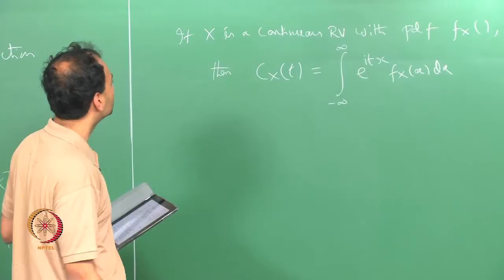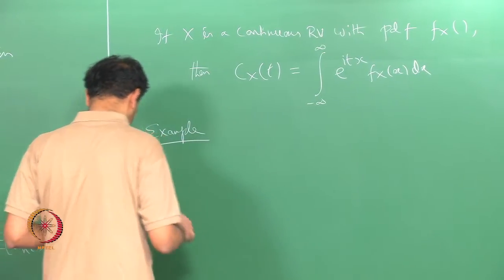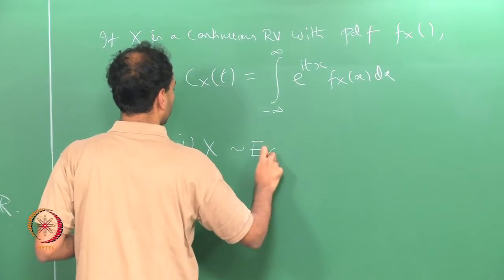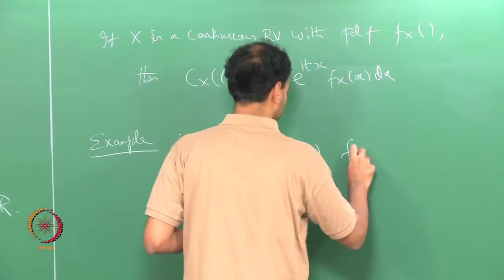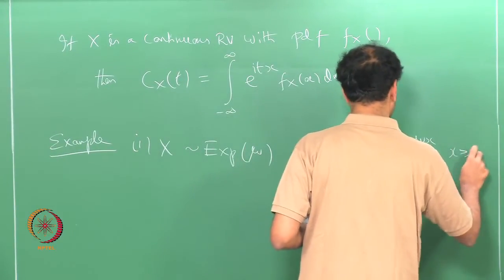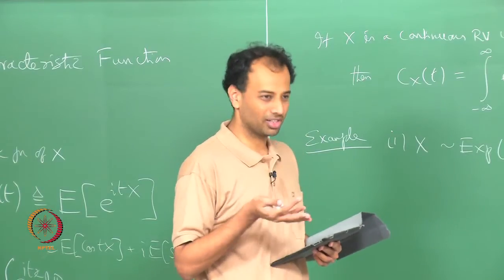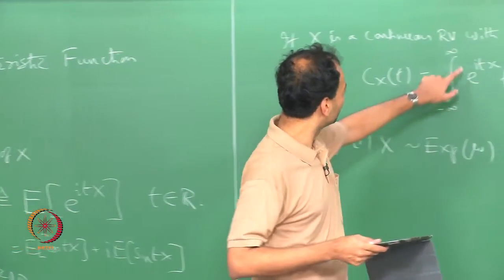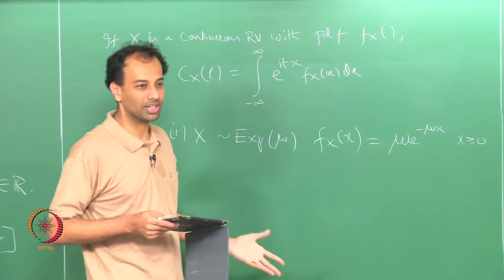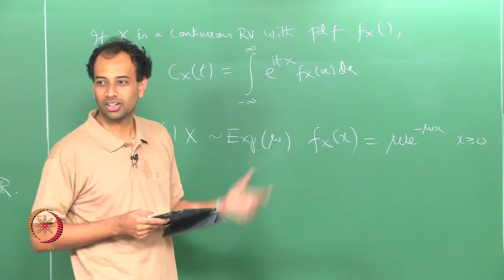Let me give an example. If x is exponential with parameter mu, then f_x equals mu e to the minus mu x for x greater than or equal to 0. You are used to computing Fourier transforms in signals and systems, so you would expect the characteristic function to be the same thing except that in the Fourier transform you have a negative sign — wherever you have a minus in the Fourier transform, you get rid of the minus essentially. If you replace your argument with minus t you should get your characteristic function.